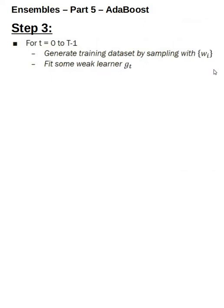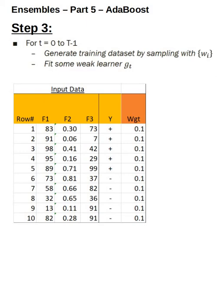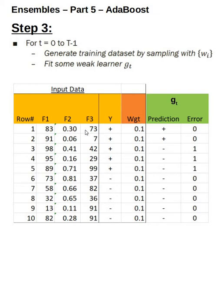Next, it creates a weak learner GT based on the algorithm chosen up front. If we've chosen a decision tree or axis-parallel algorithm, it creates that instance and makes a prediction for each row. We have the actual Y classification and the prediction from weak learner GT. The error is also calculated: if a row has no error it is marked 0, and if it has an error it is marked 1.